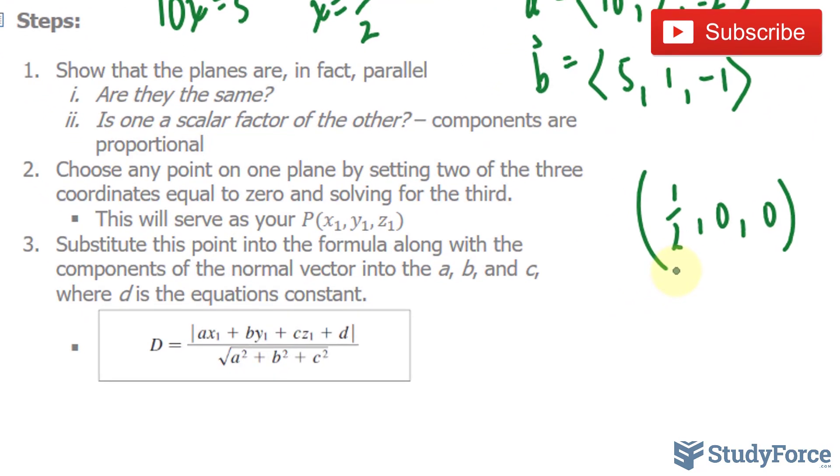We'll then take this point and substitute it into the formula that you see on your screen, along with the components of the normal vector of the other equation into a, b, and c, where d represents the equation constant.